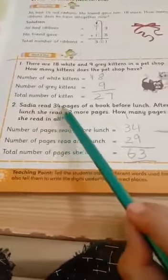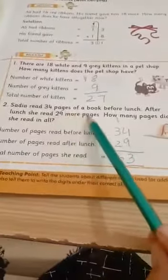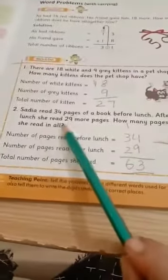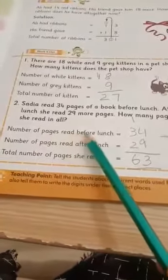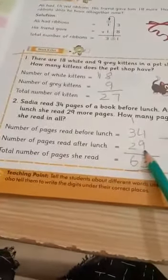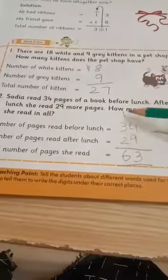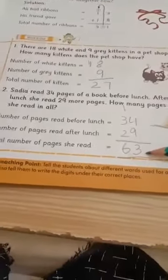Sadia read 34 pages of a book before lunch. 3 plus 1, 4. 4 plus 2, 6. 63. Total number of pages she read: 63.